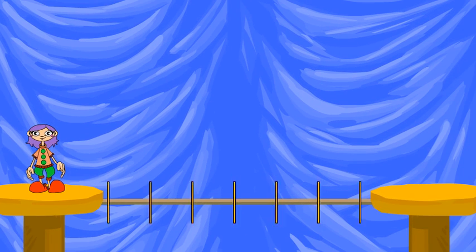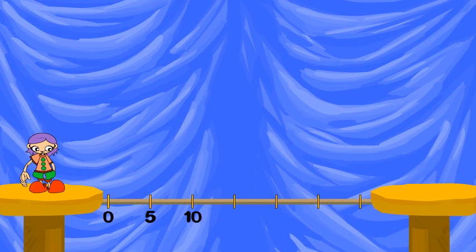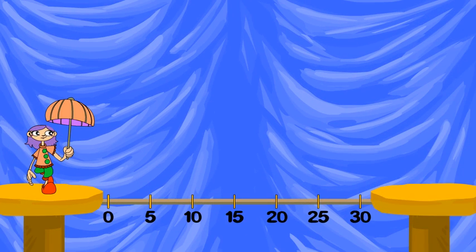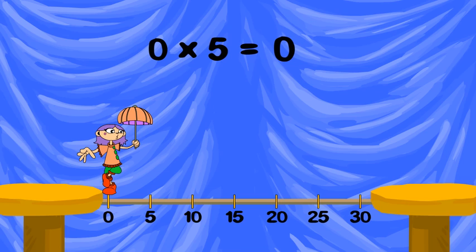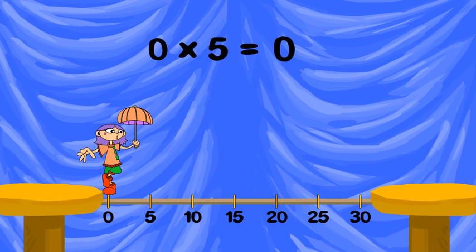Zero groups of five is zero — that's the zero property. One group of five is five — that's the identity property.